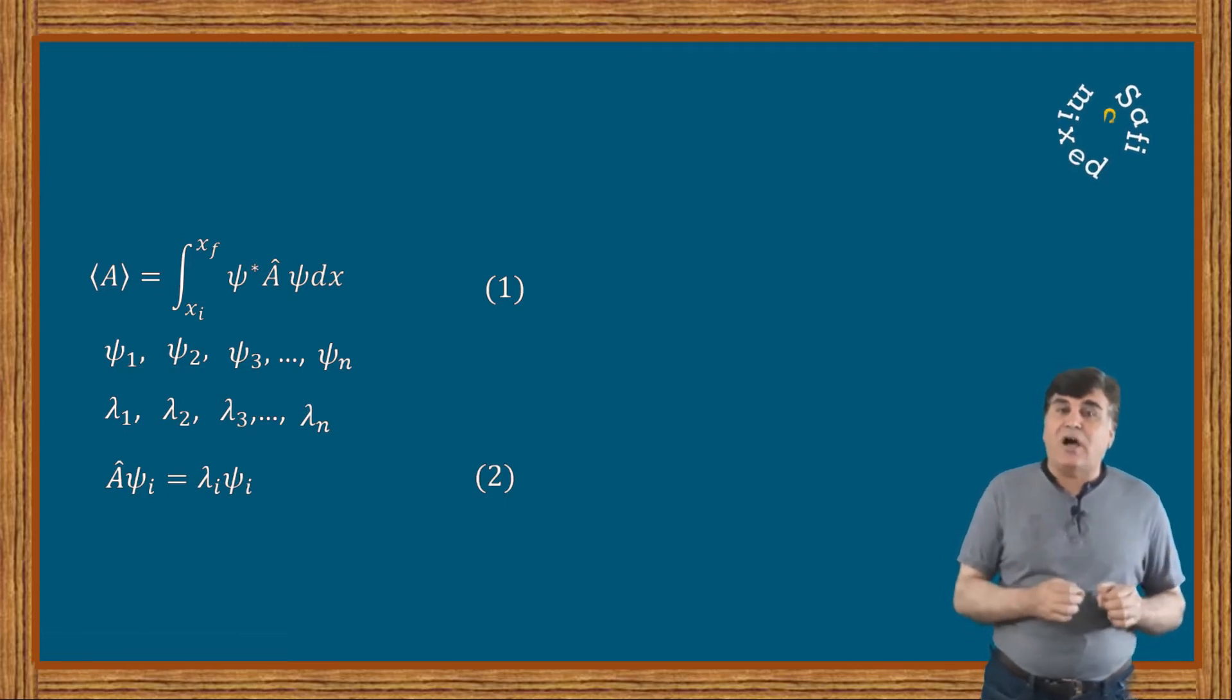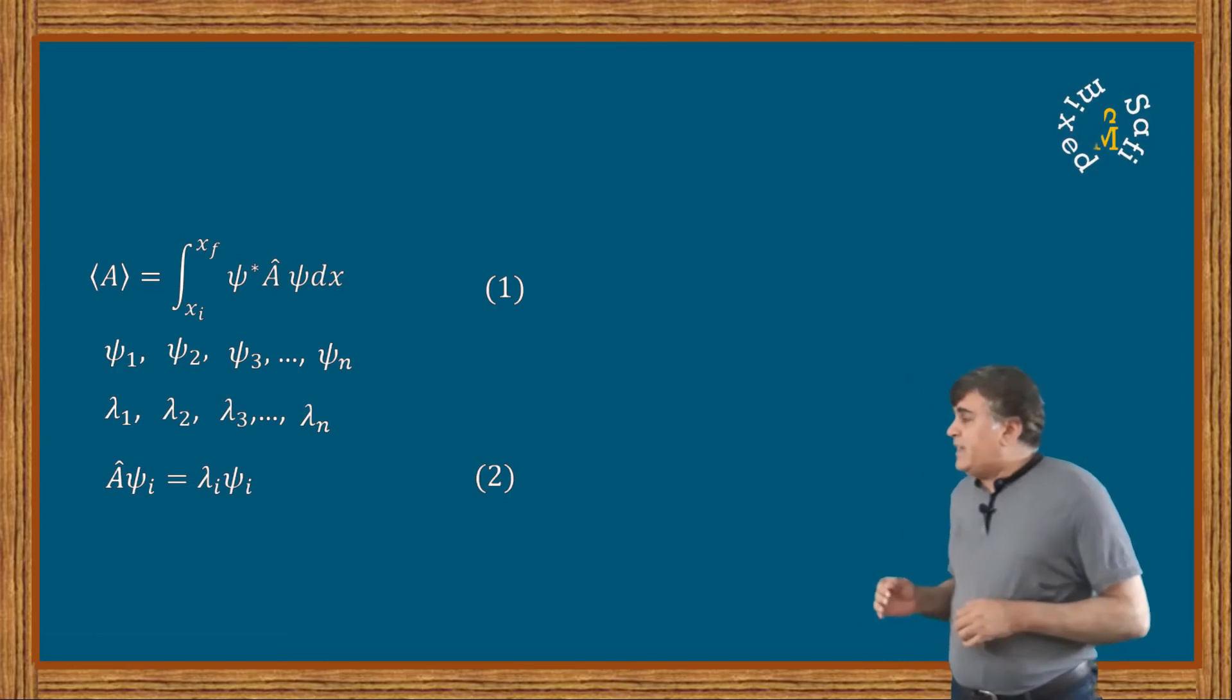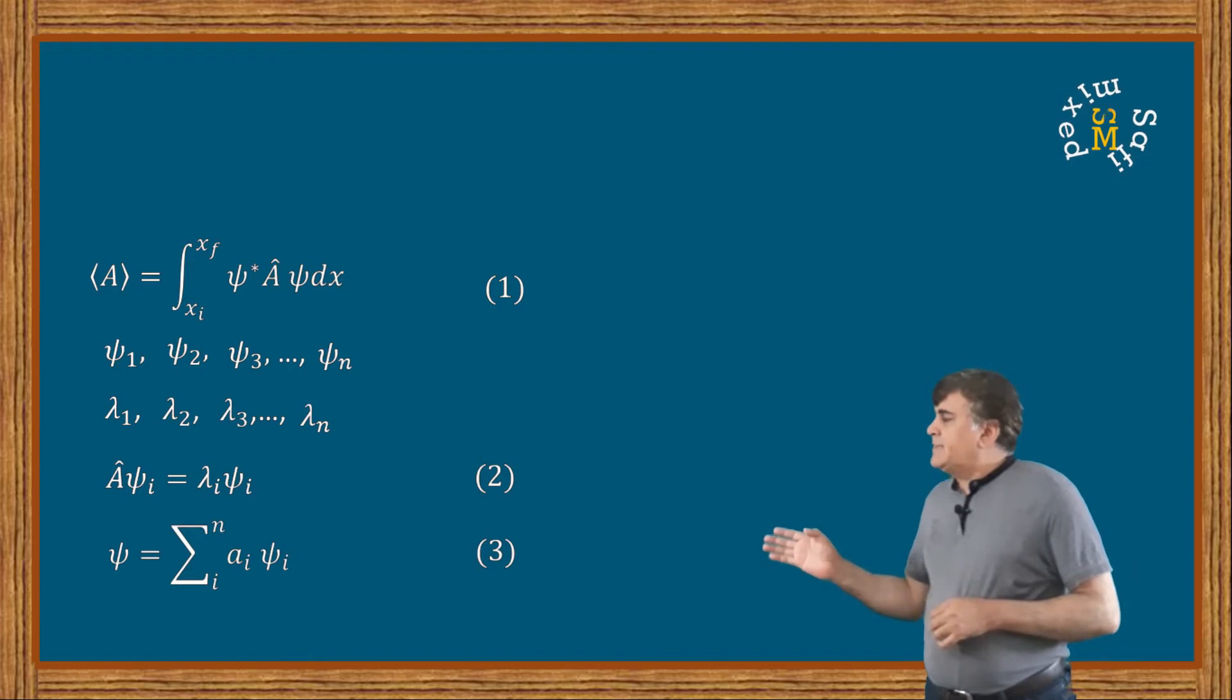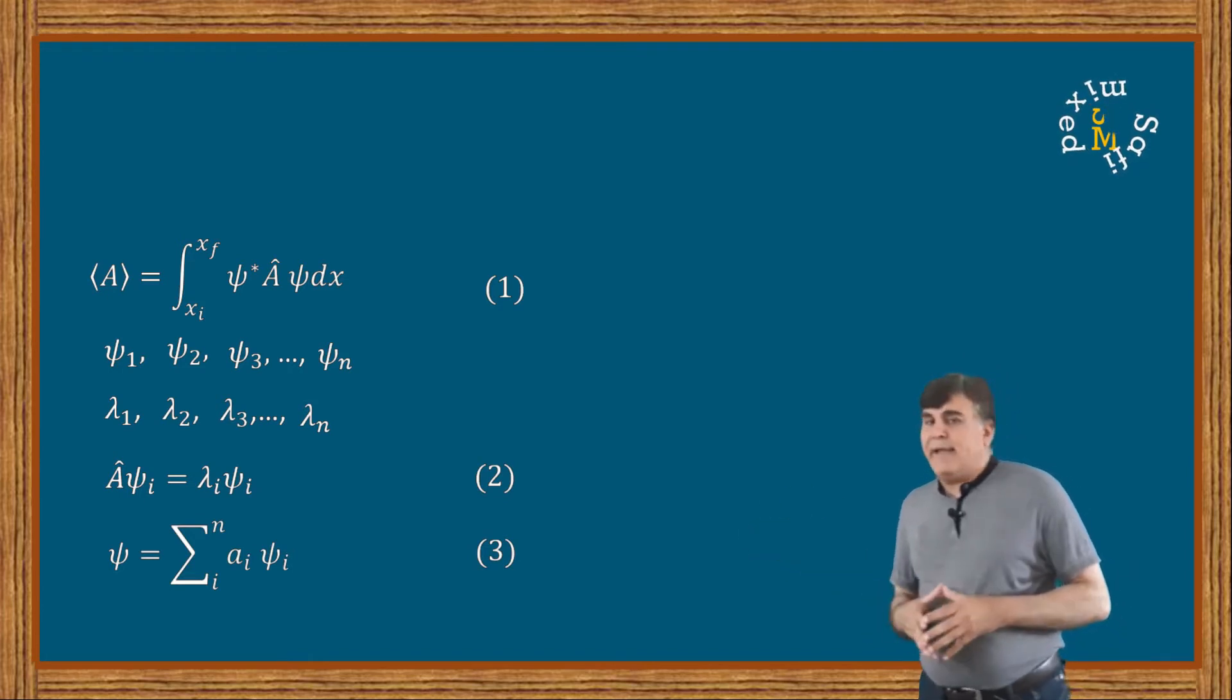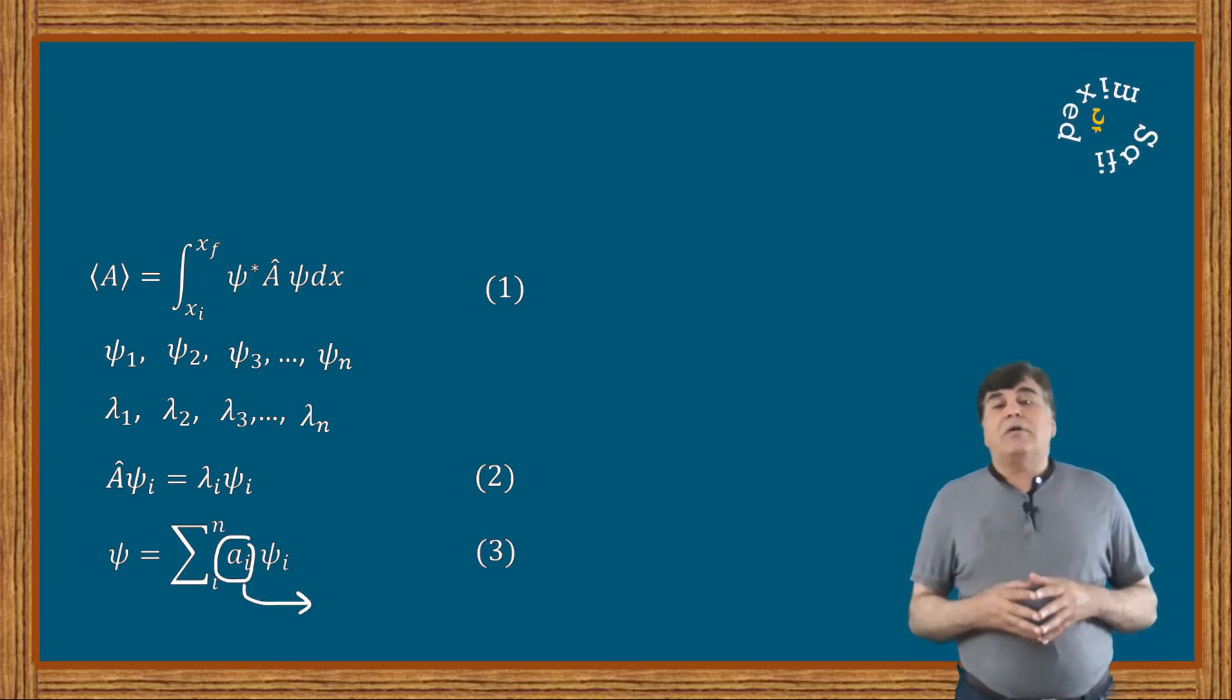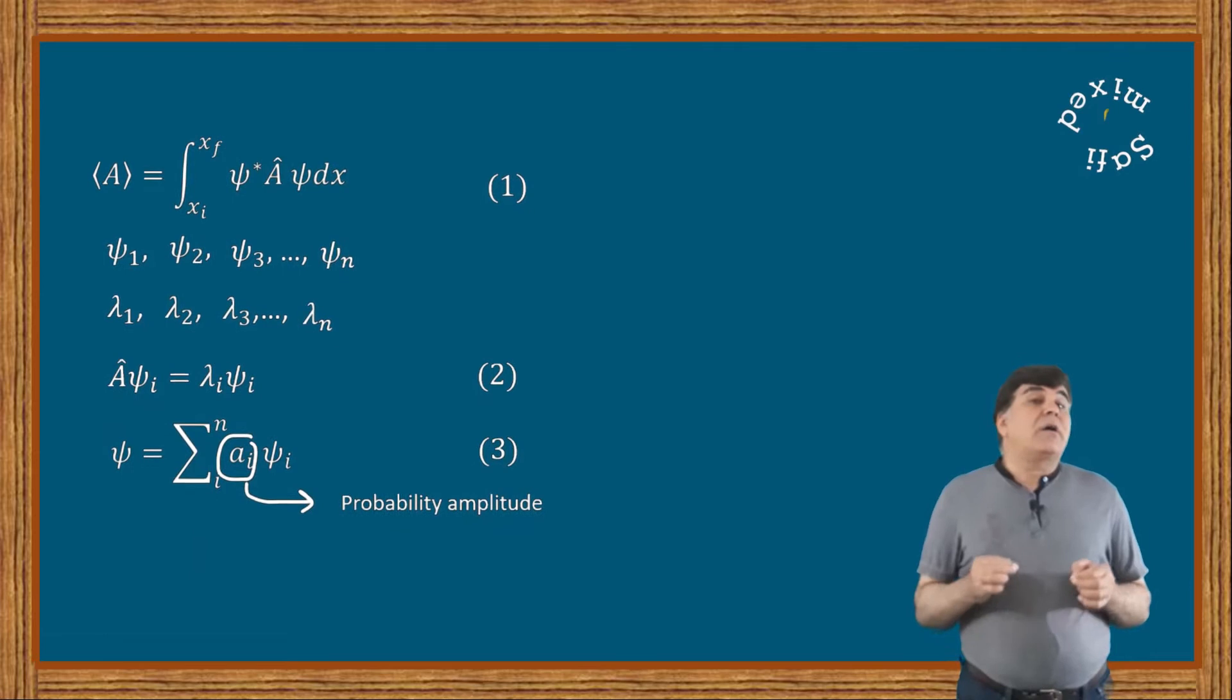That is, we can express ψ in the form of summation where aᵢ times ψᵢ, where the multiplicative parameters aᵢ are called probability amplitudes and each could be a complex number.